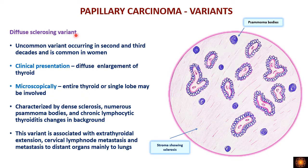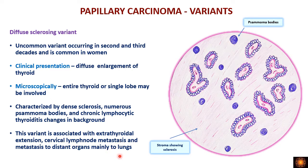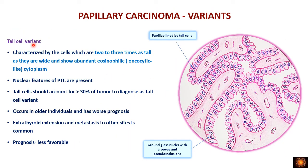The diffuse sclerosing variant is uncommon, occurring in younger age groups. As the name suggests, the tumor has sclerotic stroma with more collagen, and a characteristic feature is a large number of psammoma bodies. Papillae are seen within the sclerotic stroma. This variant has a bad prognosis — at presentation, patients often already have extrathyroidal extension, cervical lymph node metastasis, and even pulmonary metastasis.